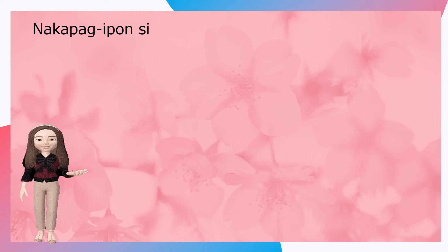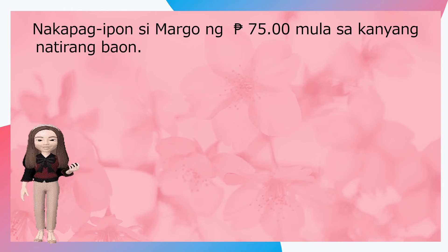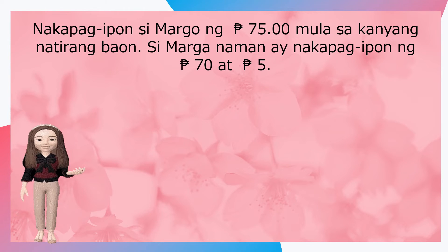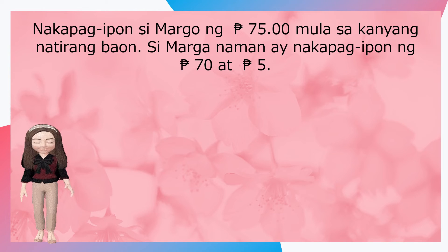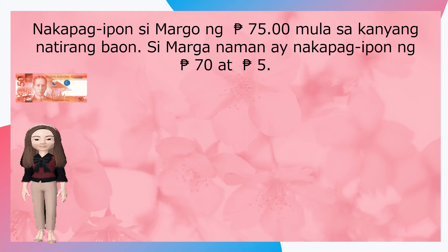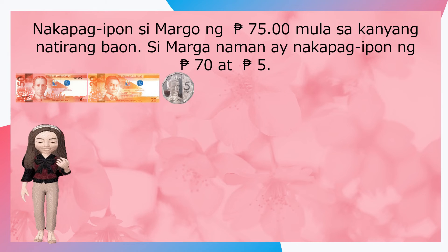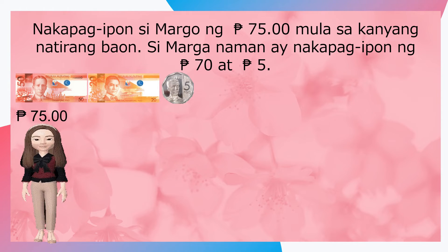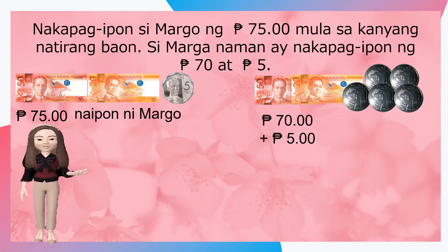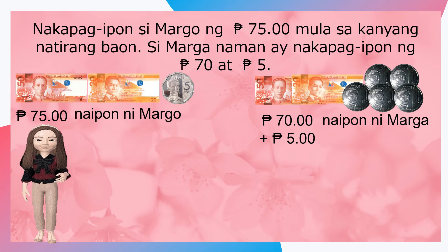Ngayon naman, ating pag-aralan. Nakapag-ipon si Margo ng pitumput limang piso mula sa kanyang natirang baon. Si Marga naman ay nakapag-ipon ng pitumpung piso at limang piso. Sino sa dalawa ang mayroong mas maliit na naipong pera? Ating alamin. Narito ang naipon ni Margo — ito ay ang pitumput limang piso. Samantalang ang naipon naman ni Marga ay pitumpung piso at limang piso.